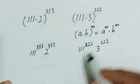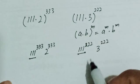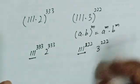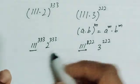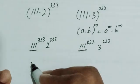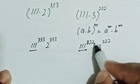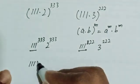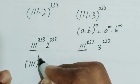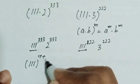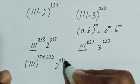Now I have the term 111 appearing in both expressions. To compare easily, I need to make the powers the same. I'll convert 111^333 by writing the exponent 333 as 111 plus 222, so 111^333 becomes 111^111 · 111^222, times 2^333.